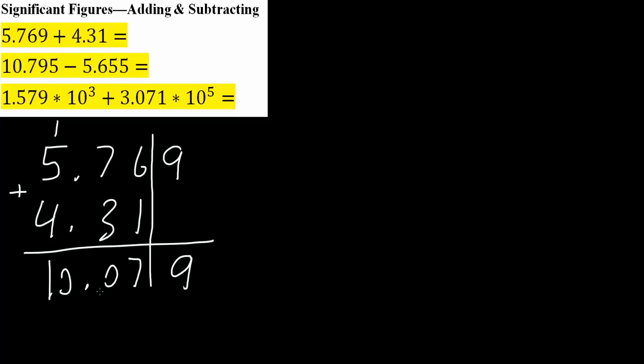However, we would only have two numbers after the decimal place because this one right here has two, and this has three. So our answer would only have two. So the final answer for this problem would be 10.08. We have two numbers at the end of the decimal.